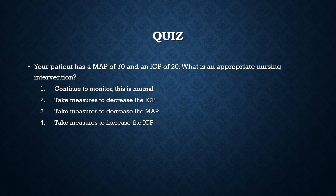Let's take a look at a question. Your patient has a MAP of 70 and an ICP of 20. What is an appropriate nursing intervention? 1. Continue to monitor — this is normal. 2. Take measures to decrease the ICP. 3. Take measures to decrease the MAP. 4. Take measures to increase the ICP. The correct answer is 2 — take measures to decrease the ICP. This patient has a CPP of 50 (70 minus 20). Because the CPP is low, we need to address the abnormal number, which in this case is the ICP — it's too high. So we need to reduce that counter pressure, that ICP, to improve CPP.